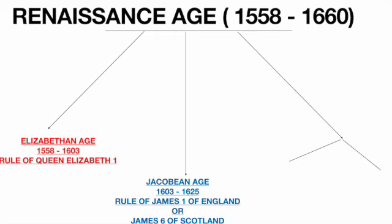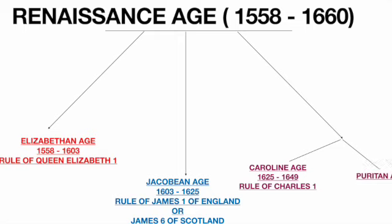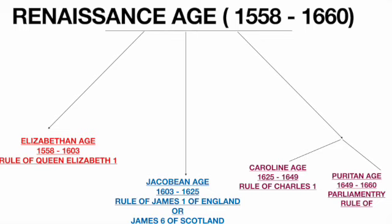Moving further, the third age is bifurcated into two parts. The first is the Caroline Age, from 1625 to 1649, when Charles I is the ruler. Then we have the Puritan Age, from 1649 to the 1660s, the time period when parliamentary control prevails — when Oliver Cromwell and Richard Cromwell rule. So the four divisions are: Elizabethan, Jacobean, Caroline, and Puritan.